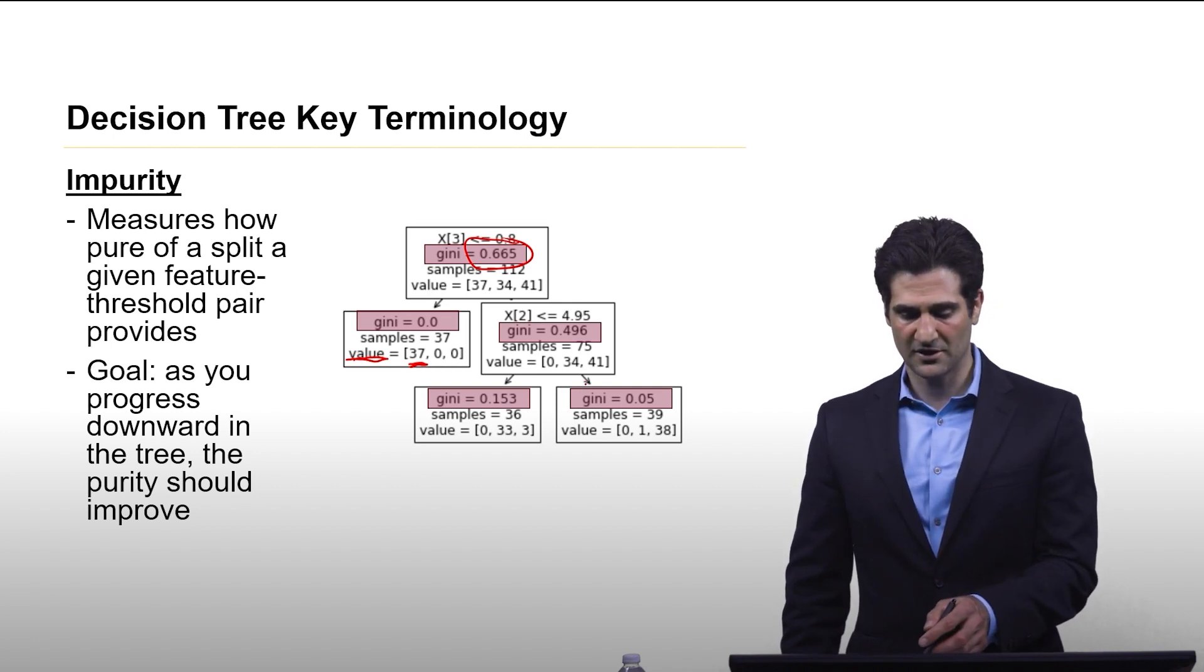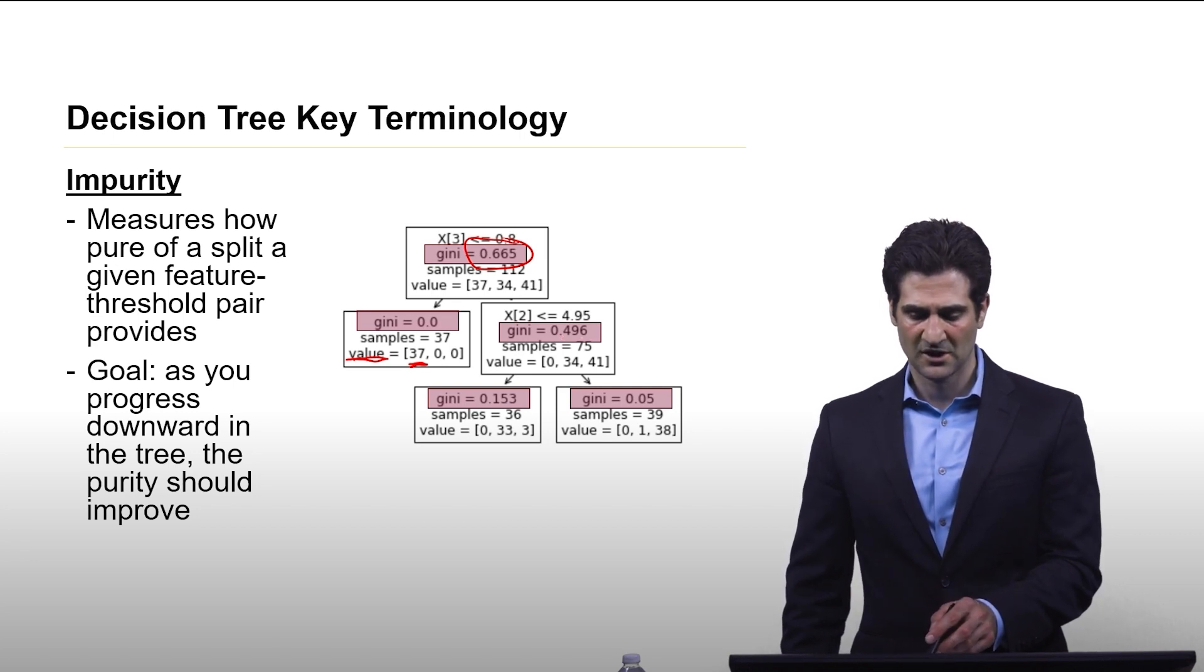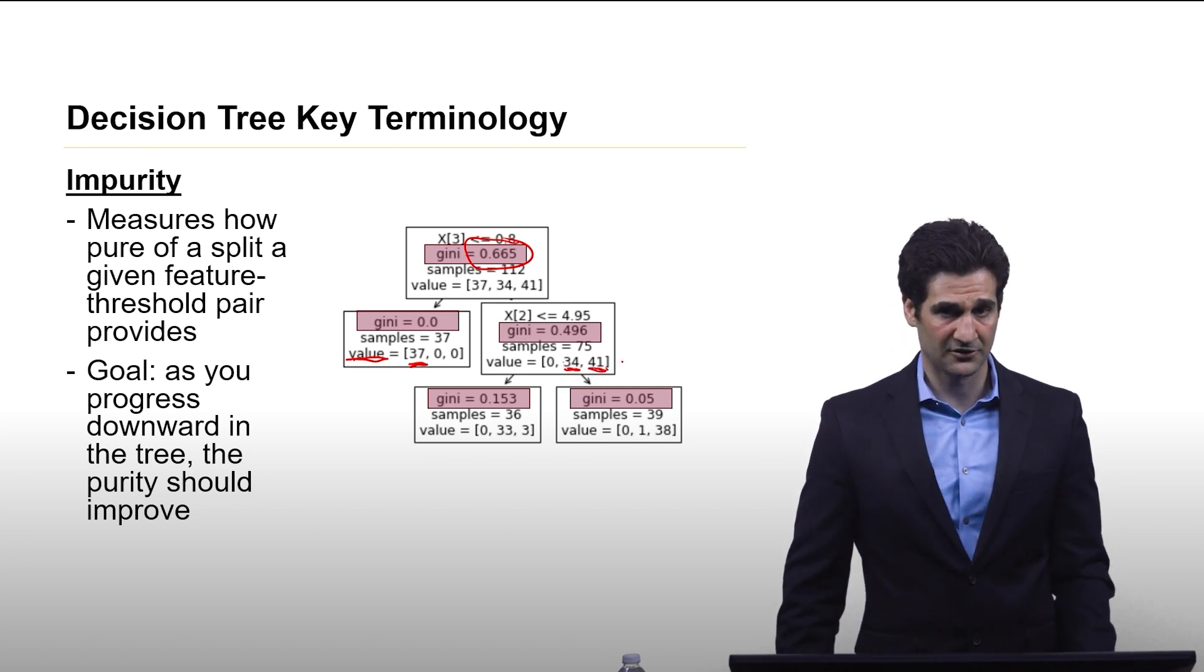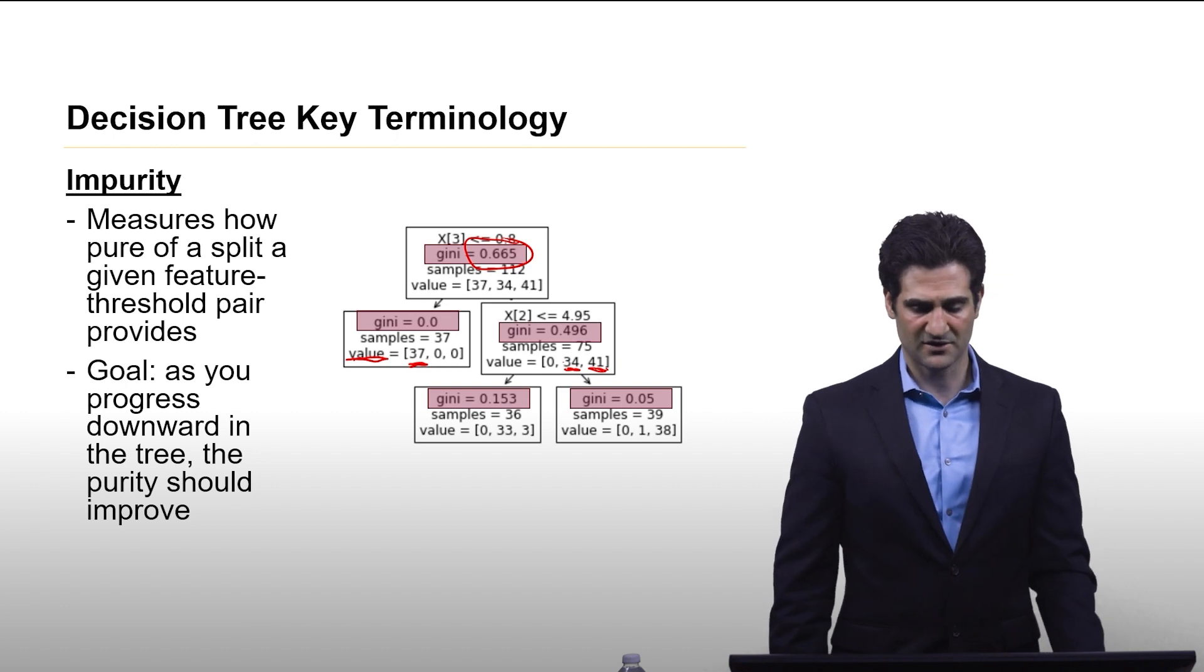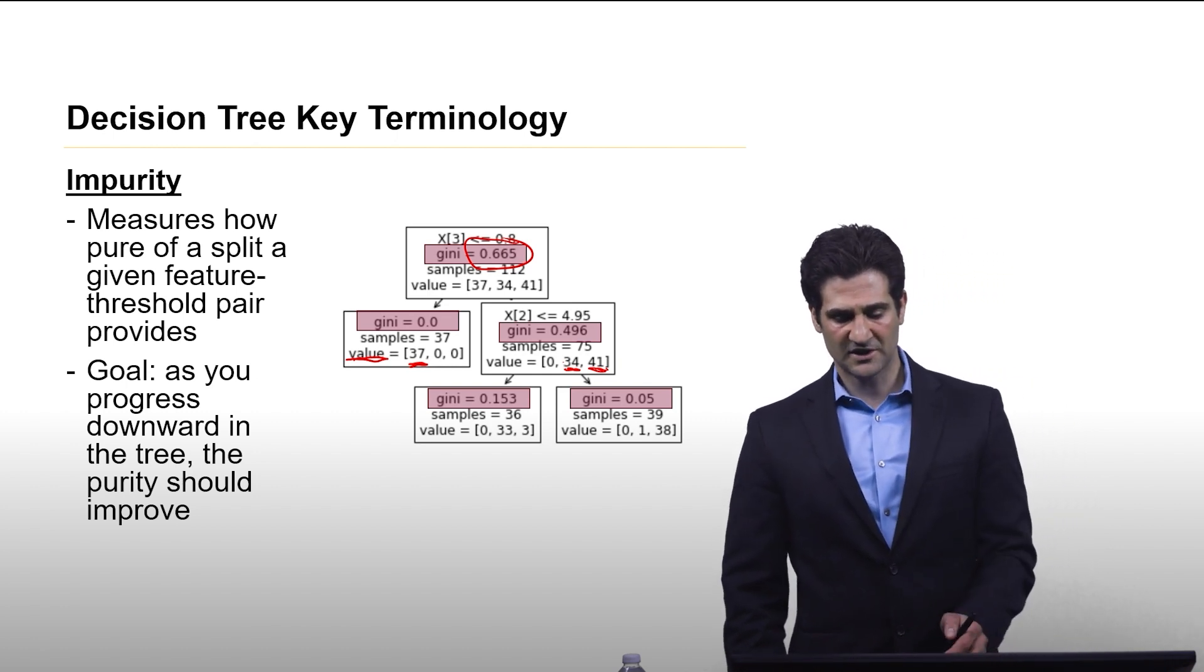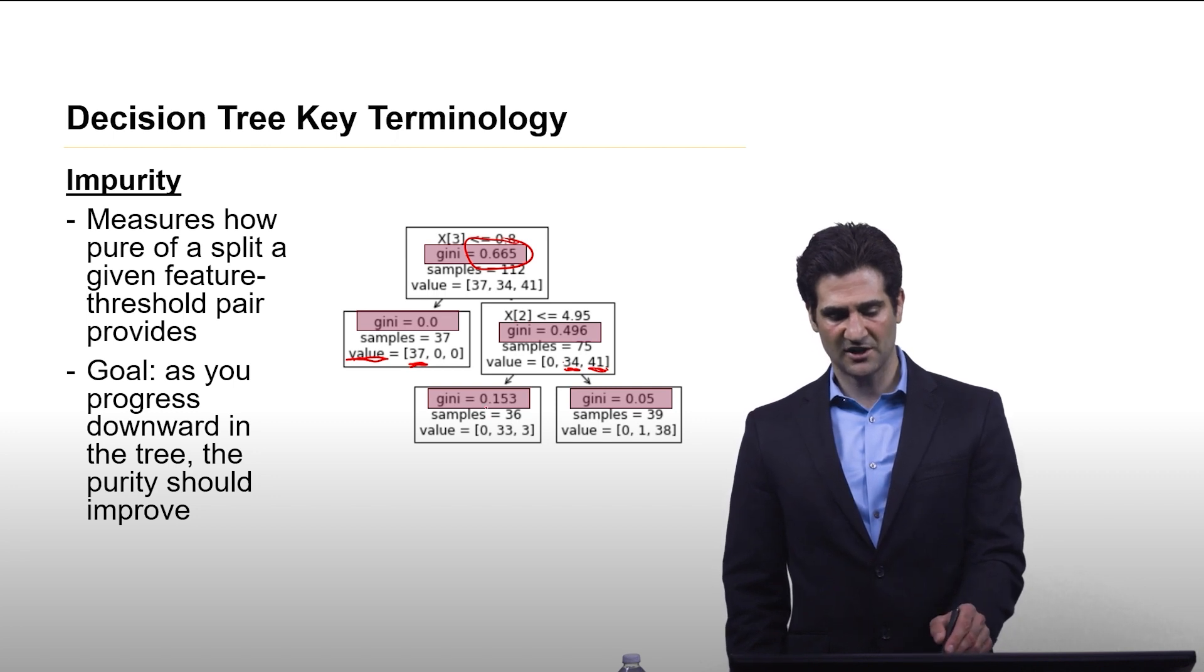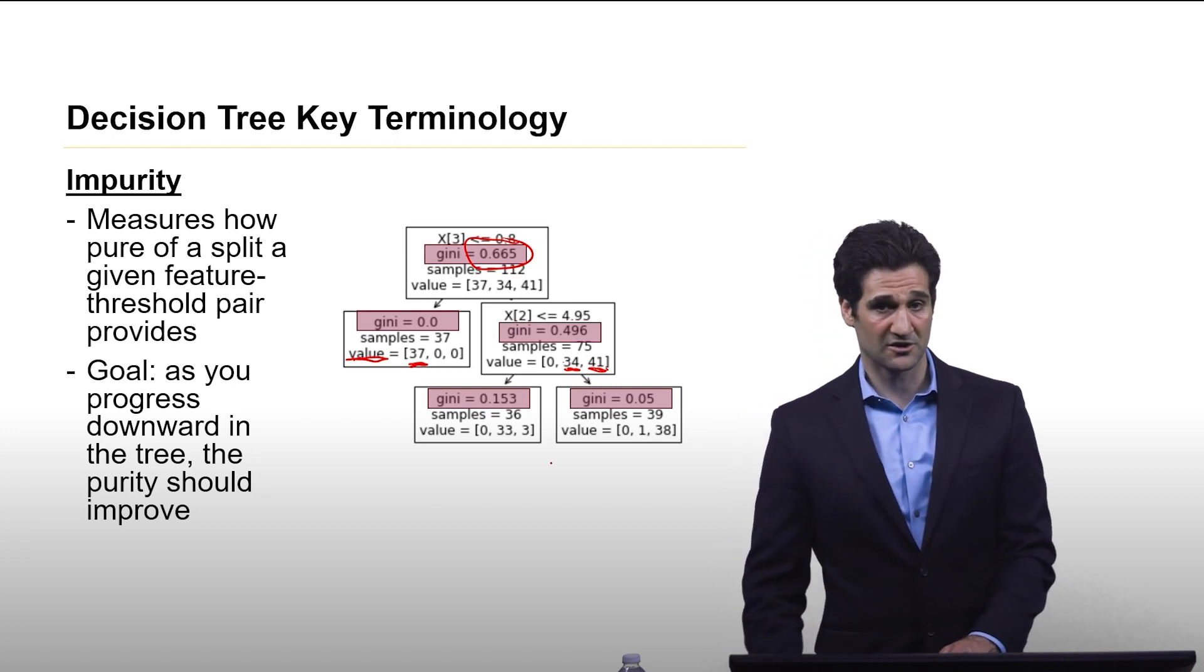However, you go to the other node on the other side, the Gini index drops, but it only drops to 0.496. And we see they're still, just looking empirically, these two classes are roughly balanced in terms of quantity of samples. But then we take this additional split. But we see the Gini index drops again in both those leaf nodes to something much lower.